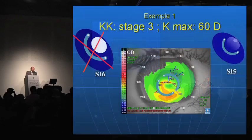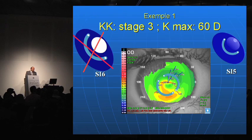Another example of advanced stage keratoconus — stage three — with a large surface of ectasia reaching the center. As discussed, the only choice here is the SI5 profile, and this is the post-op topography result.